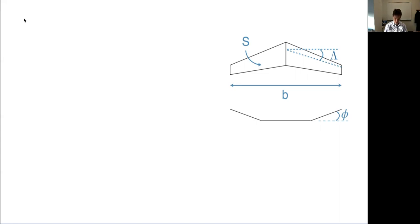Taper ratio is the ratio of the chord at the tip relative to the root. A typical transport airplane has an aspect ratio of about eight or nine and a taper ratio of around 0.2 to 0.3. A fighter jet will have a much lower aspect ratio, maybe three or four. Another parameter we'll use is the mean aerodynamic chord, distinct from the mean geometric chord.